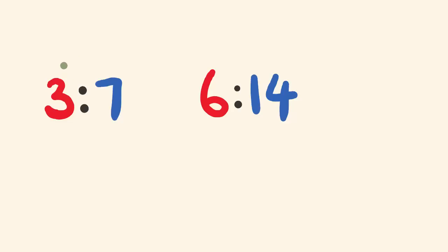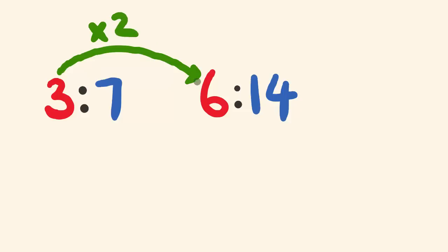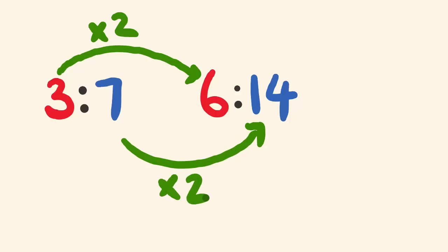This is a fairly simple example, so let's do it the simple way. Looking at the cordial first: we have three parts in one glass and six parts in the other, so we have twice as much cordial. Looking at the water: seven parts and 14 parts — also a doubling. So these ratios are said to be in proportion; these glasses of cordial would have the same strength.